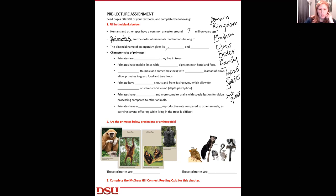The binomial name of an organism gives its genus and species. For instance, humans are Homo sapiens. The genus is capitalized, the species is not.